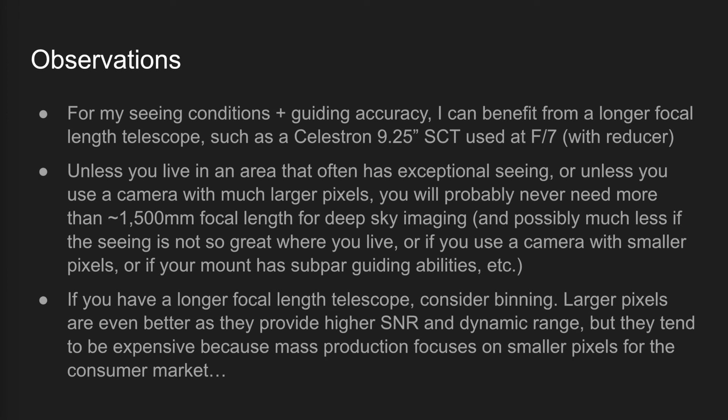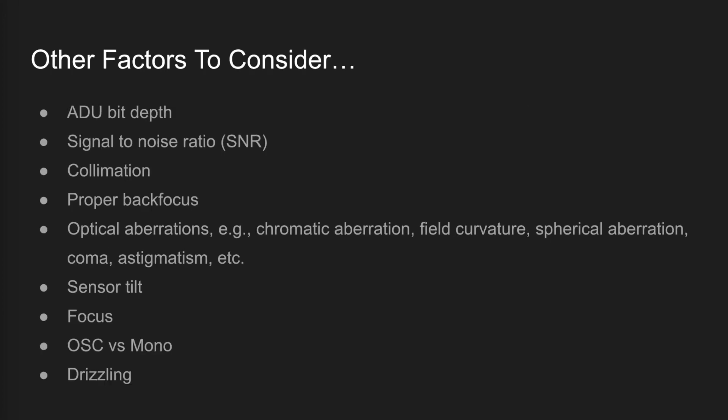Even better than binning, look for cameras with larger pixels if you can find them, although they can be quite expensive because the semiconductor industry is focusing more and more on making pixels smaller for the consumer market — cameras with larger pixels are made in much smaller batches, which is why they're so much more expensive. There are many other factors to consider when optimizing the resolution of your imaging system, which I won't cover in this video, but these are things to look into if you want to make the most out of your equipment.